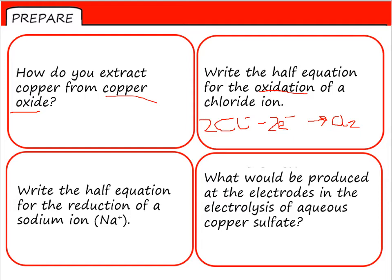Write the half equation for the reduction of a sodium ion. So my sodium ion Na+, I know that I'm going to gain electrons in a reduction and end up with a sodium atom. And Na+, it's going to need to gain one electron to become the sodium atom. And I can see it's reduction because reduction is gain of electrons.